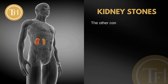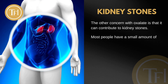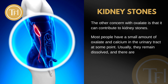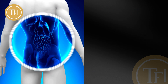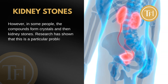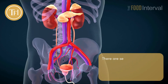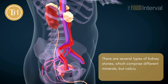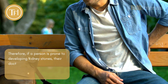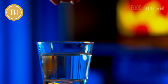The oxalate forms complexes with these minerals and can inhibit their absorption. The other concern with oxalate is that it can contribute to kidney stones. Most people have small amounts of oxalate and calcium in the urinary tract, and usually they remain dissolved with no associated problems. However, in some people the compounds form crystals and then kidney stones. Research has shown this is a particular problem when oxalate levels are high and urinary volume is low. Calcium oxalate is the most common type of kidney stone.